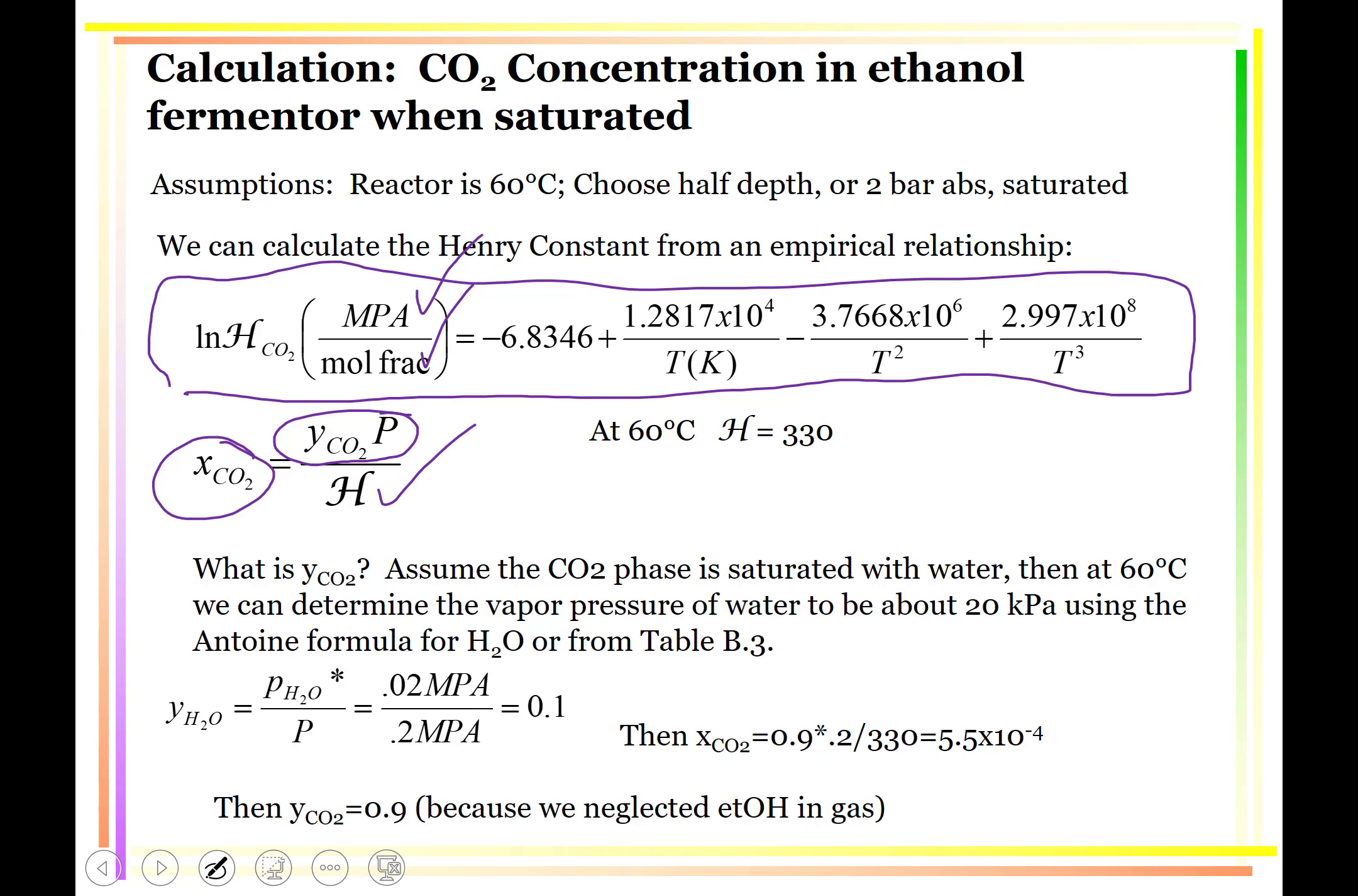So at 60 degrees C, we calculate the Henry constant to be 330. All right. That's high, but not that high.